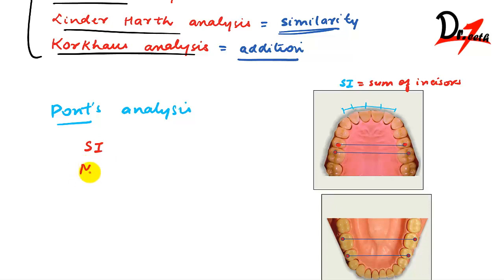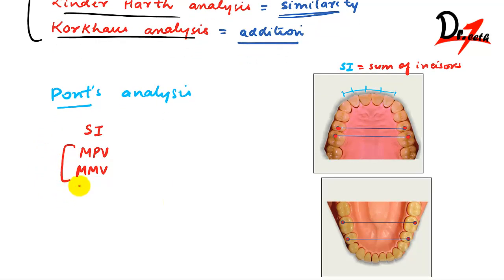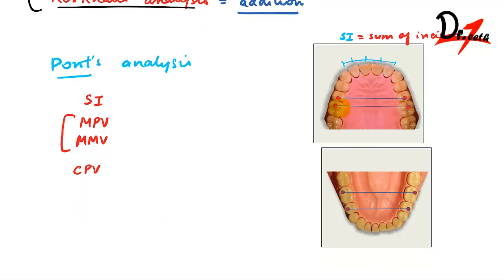He also measured from one first molar to the other. For this he took the mesial pit on the occlusal surface — from one mesial pit to the other mesial pit of the first molar — and called it the MMV, Measured Molar Value. Now we also calculate: CPV (Calculated Premolar Value) and CMV (Calculated Molar Value).